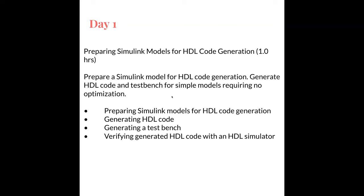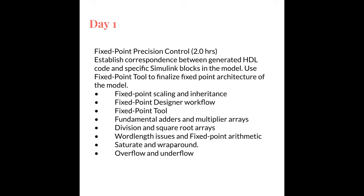On day one, we start by preparing a Simulink model for HDL code generation. We're going to generate the HDL code, which is human readable. In my experience, the quality of the HDL code produced by the HDL Coder toolbox is excellent, and it can also produce a test bench at the same time. We start with a simple model that doesn't need a lot of optimization. Then we move on to fixed point precision control, which establishes a correspondence between the generated HDL code and the specific Simulink blocks used in your model, using the fixed point tool to finalize the fixed point architecture. This is estimated to take about two hours.